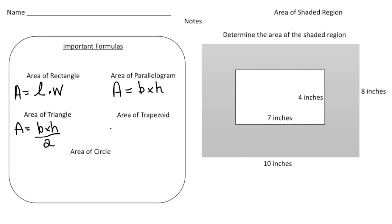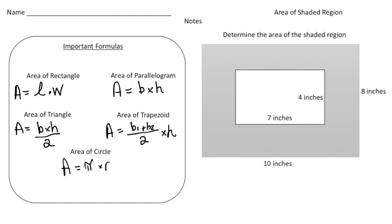To find the area of a trapezoid, the area is base one plus base two, divided in half, and then times the height. And finally, to find the area of a circle, the area equals pi times radius squared. We're going to use all these formulas throughout the activity.